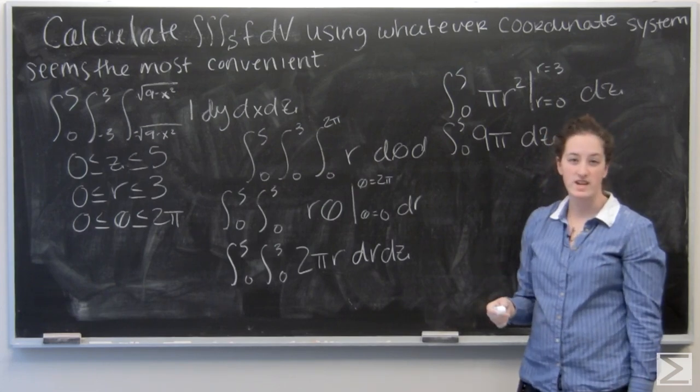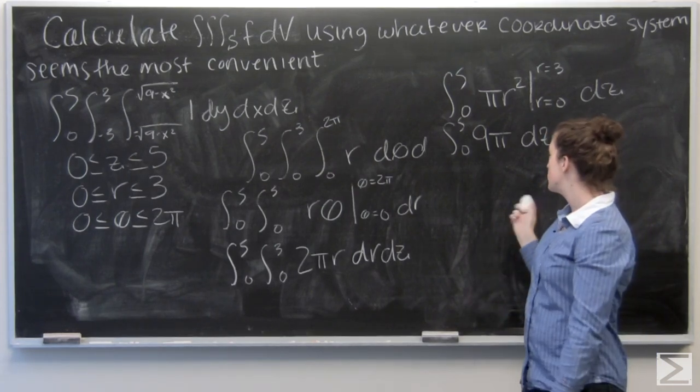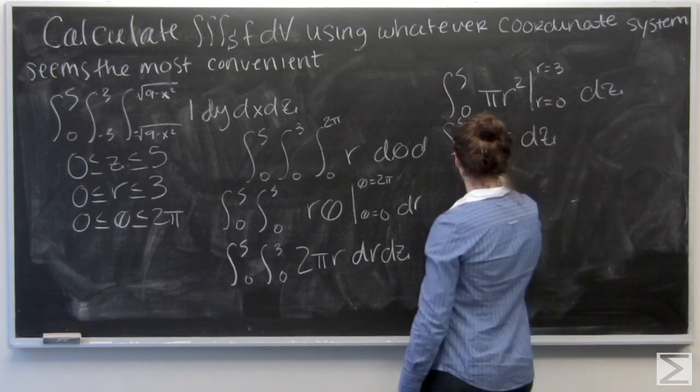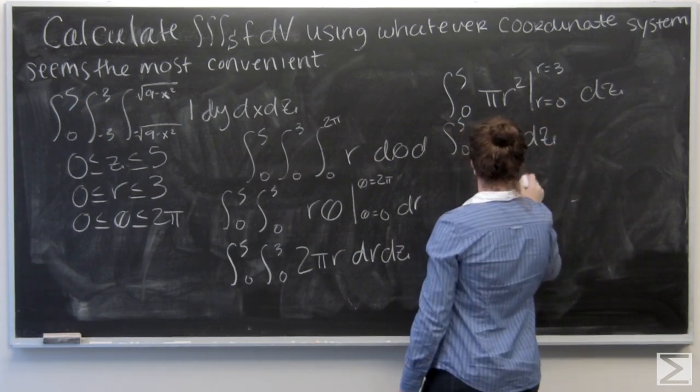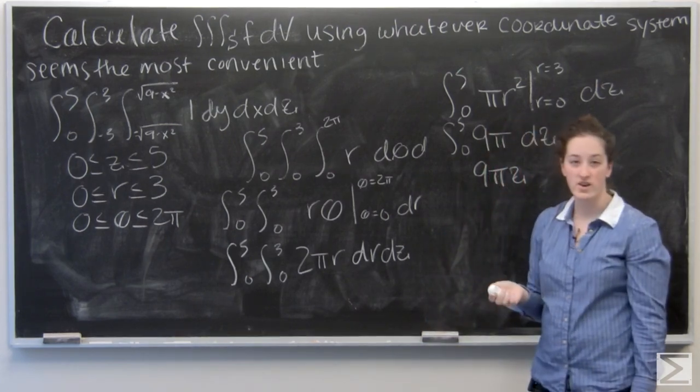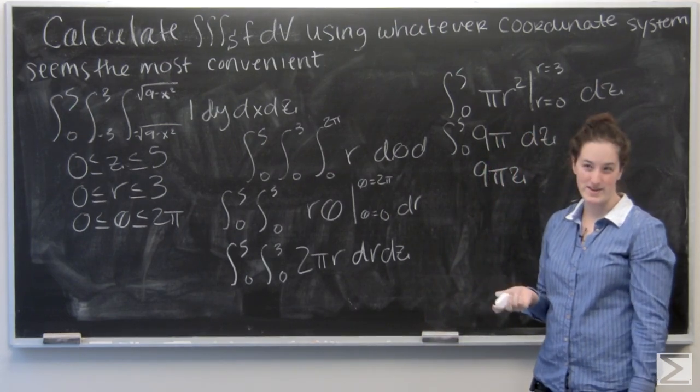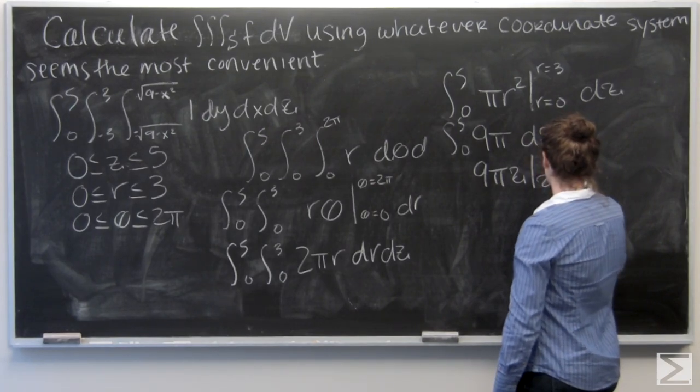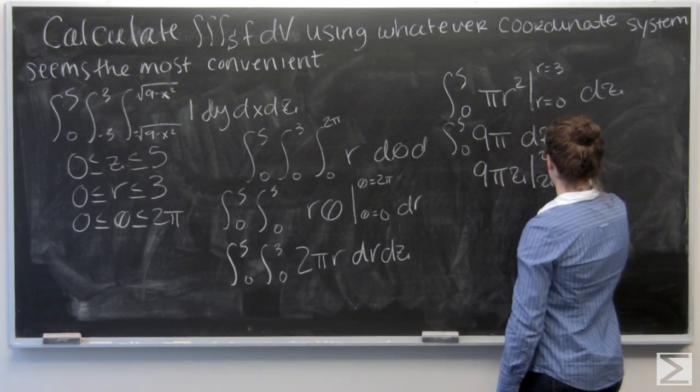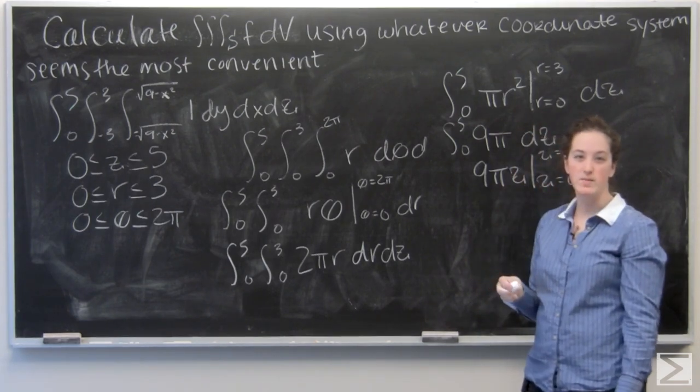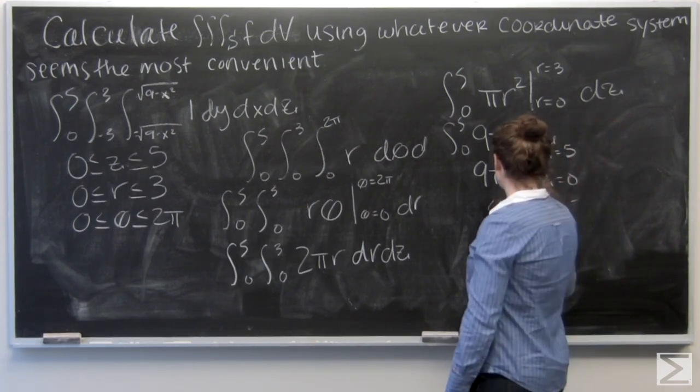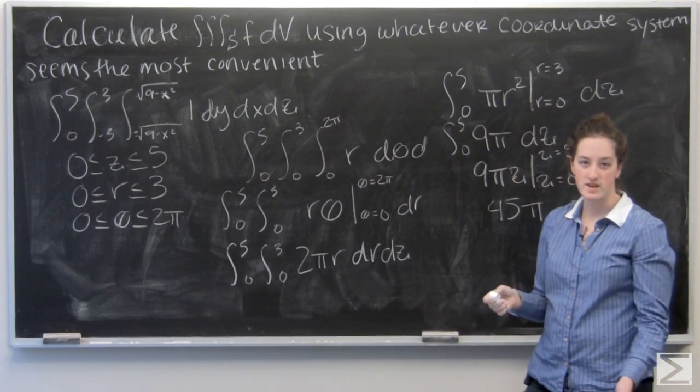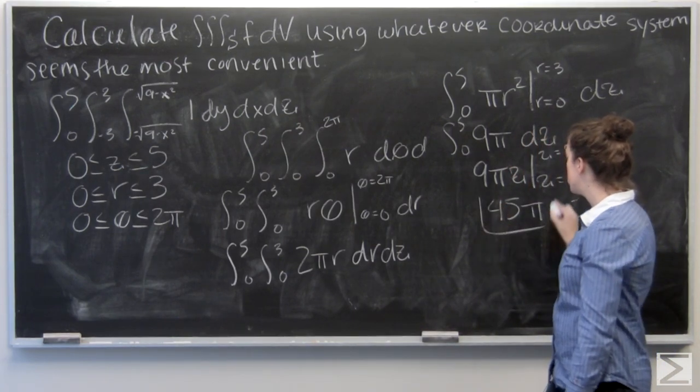So now I'm just left to integrate nine pi with respect to z. Nine pi is just a constant, so I'm going to get nine pi z. And I'm going to evaluate from z equals zero to z equals five. So when I plug in five for z, I'm going to get 45 pi. And when I plug in zero for z, I'm just going to get zero. So 45 pi is my answer.